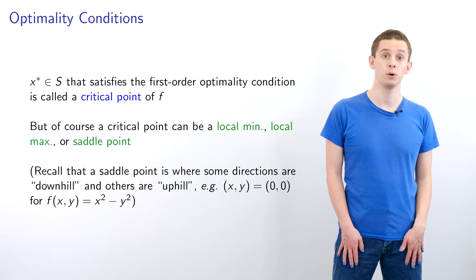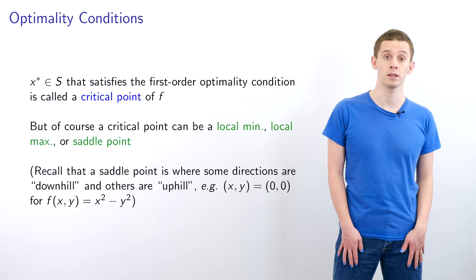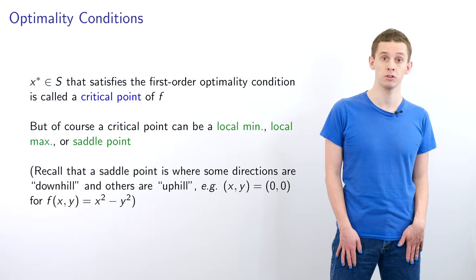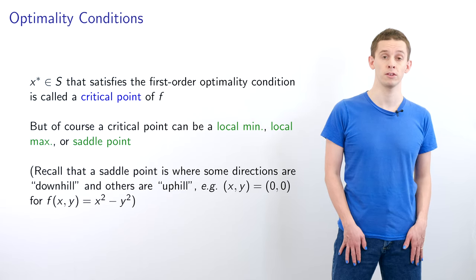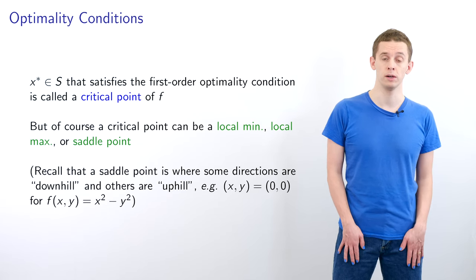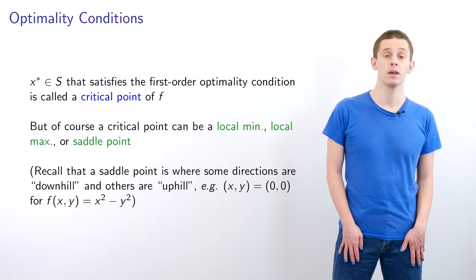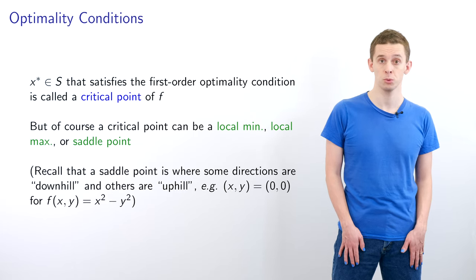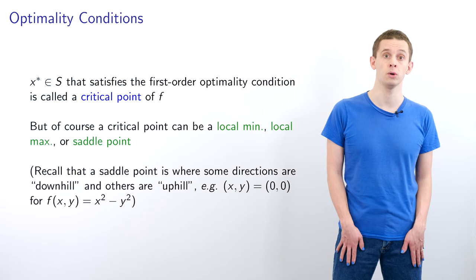Of course, a critical point can be a local minimum, a local maximum, or a saddle point. A saddle point is where some directions are downhill and some are uphill. For example, consider f(x, y) = x² - y². The point (0, 0) is a saddle point: if we move in the x direction, the function increases, and if we move in the y direction, the function decreases.